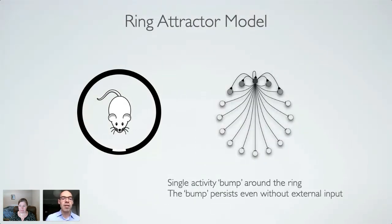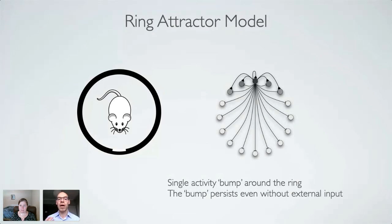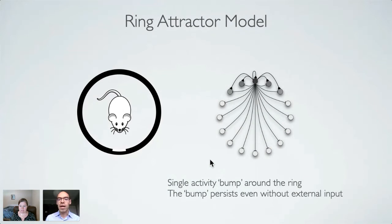A common hypothesis is that these cells are part of a ring attractor. A ring attractor is a ring of neurons connected in such a way so that only a localized group of neurons is maximally active at any moment in time, and all other neurons are silenced. This results in a localized bump of activity that can be maintained even without providing an external stimulus to the circuit.